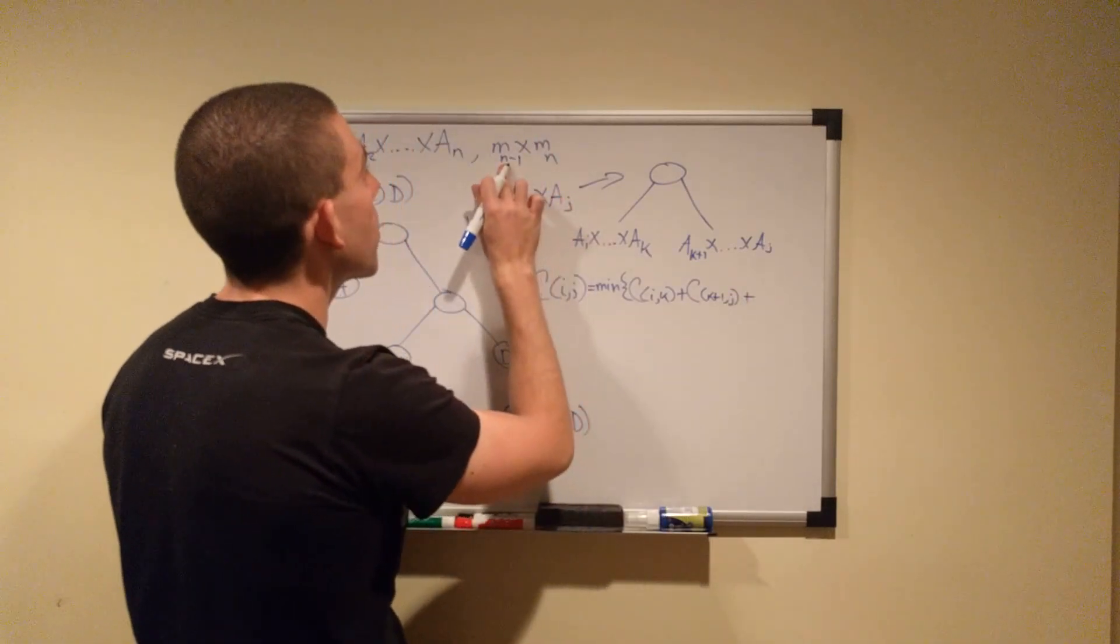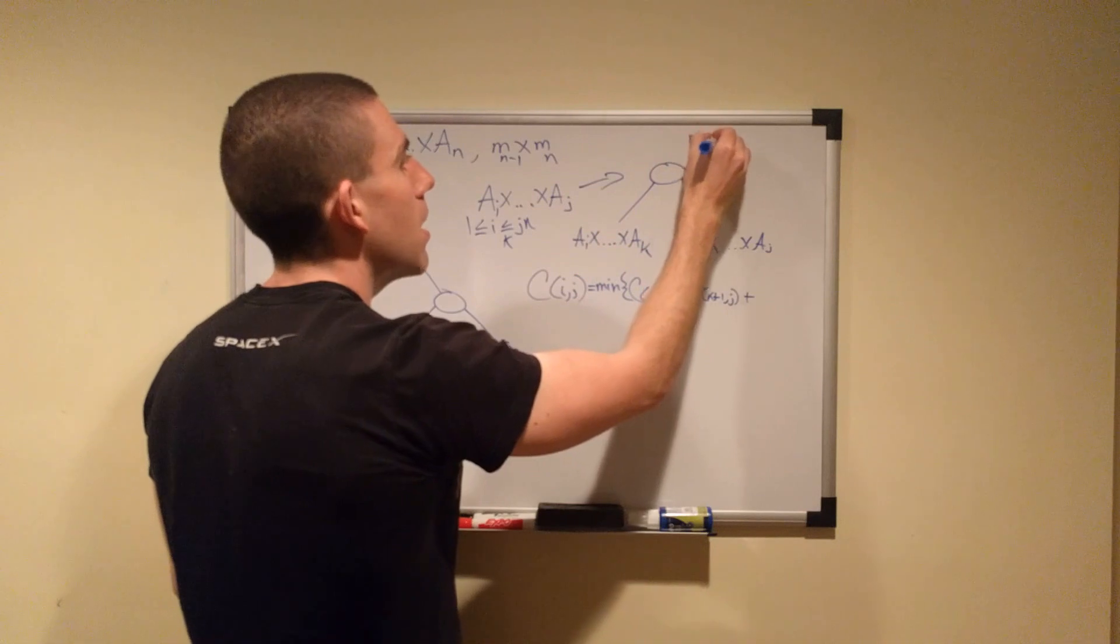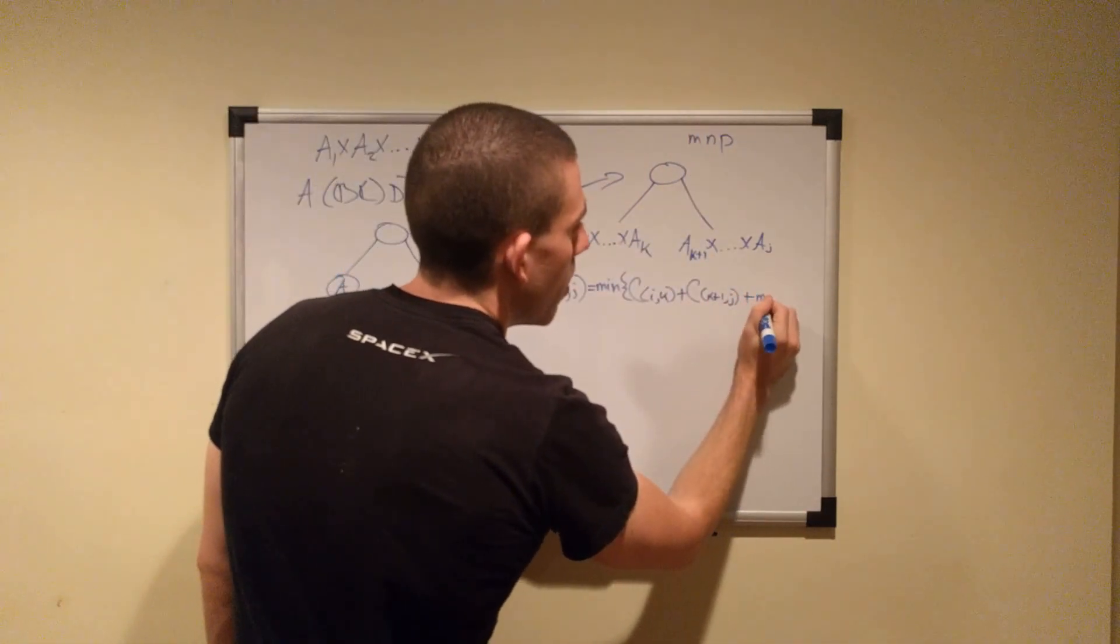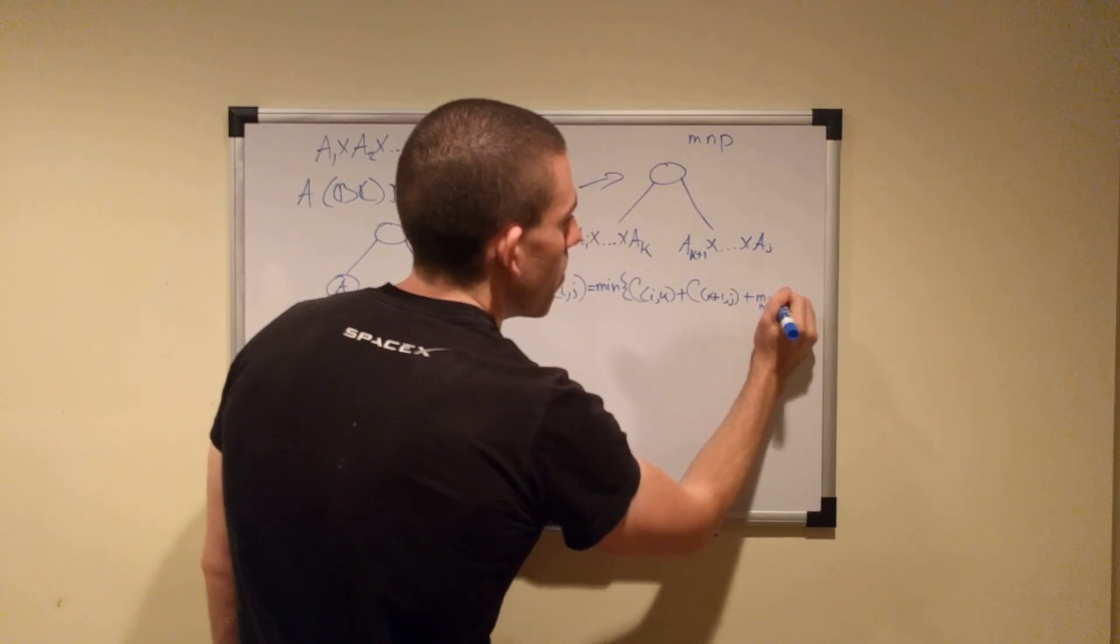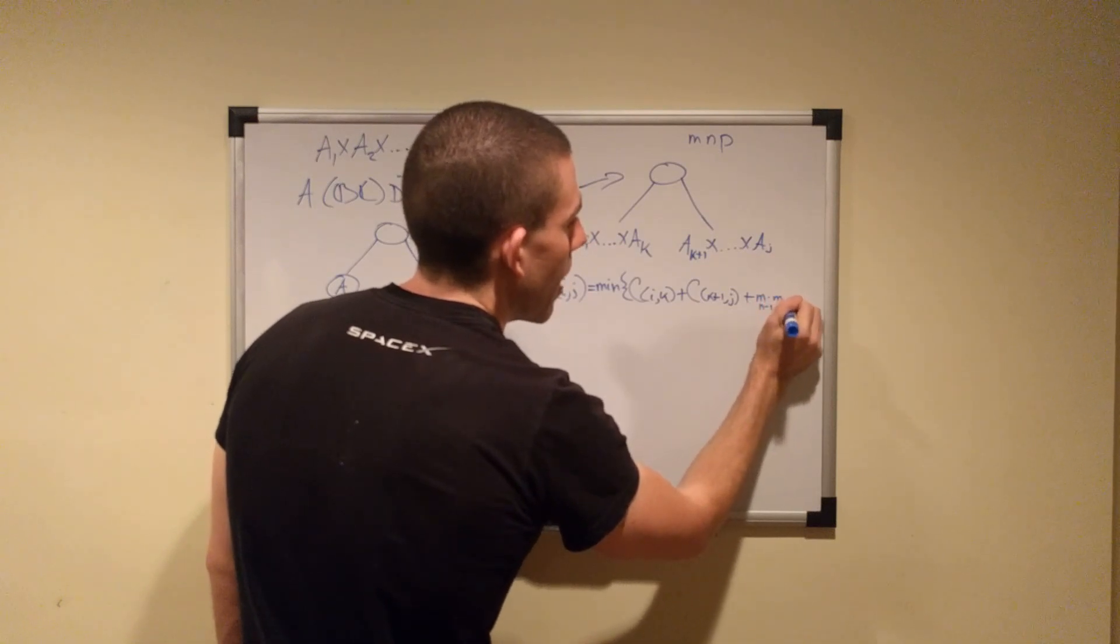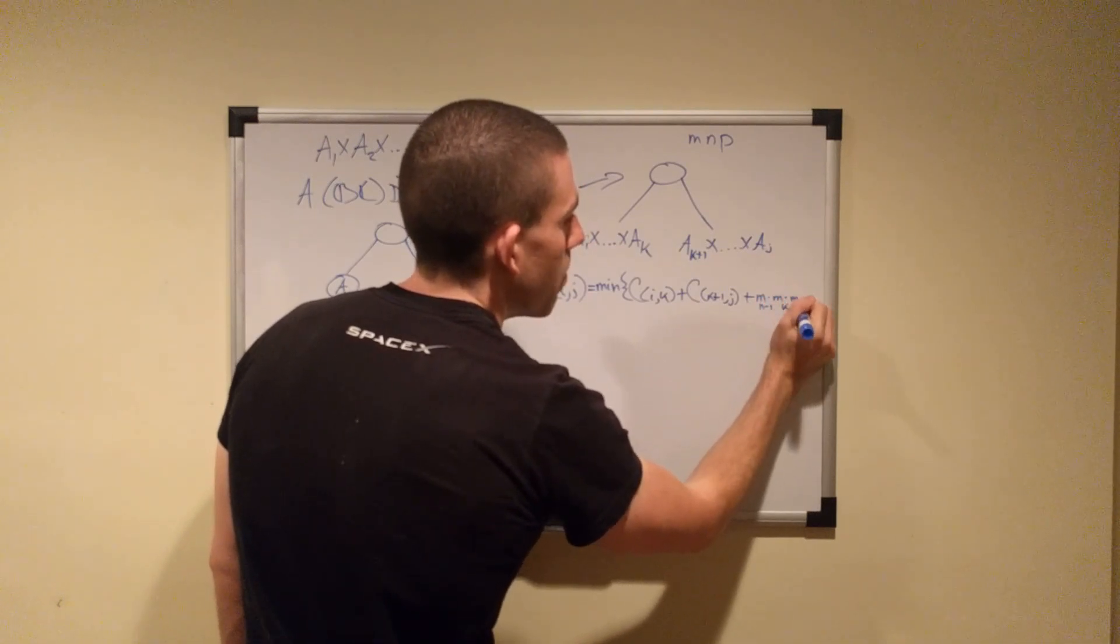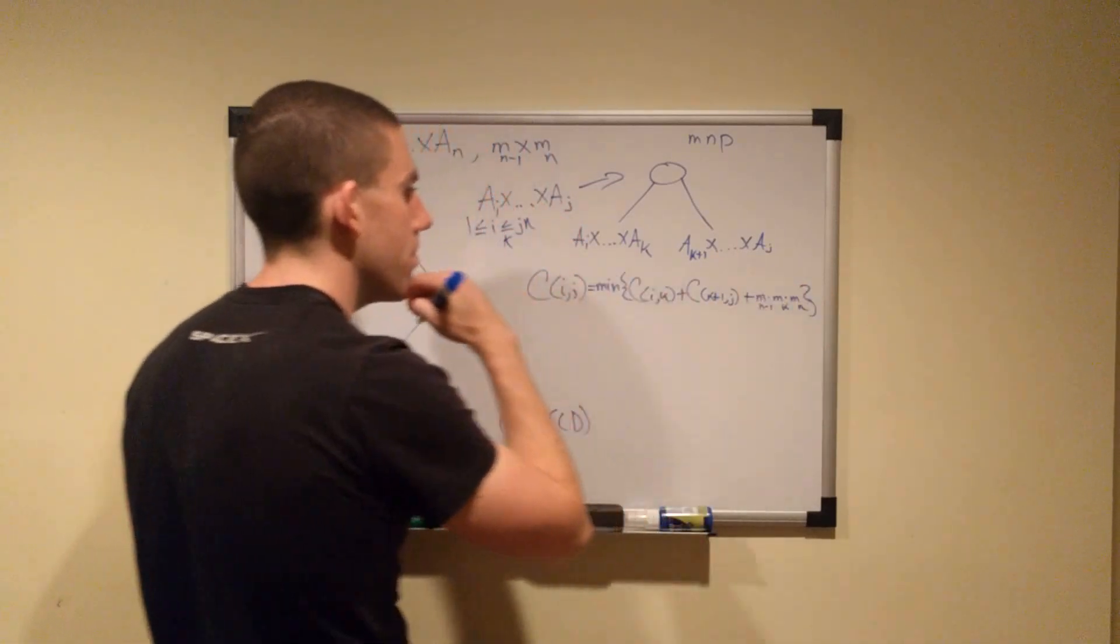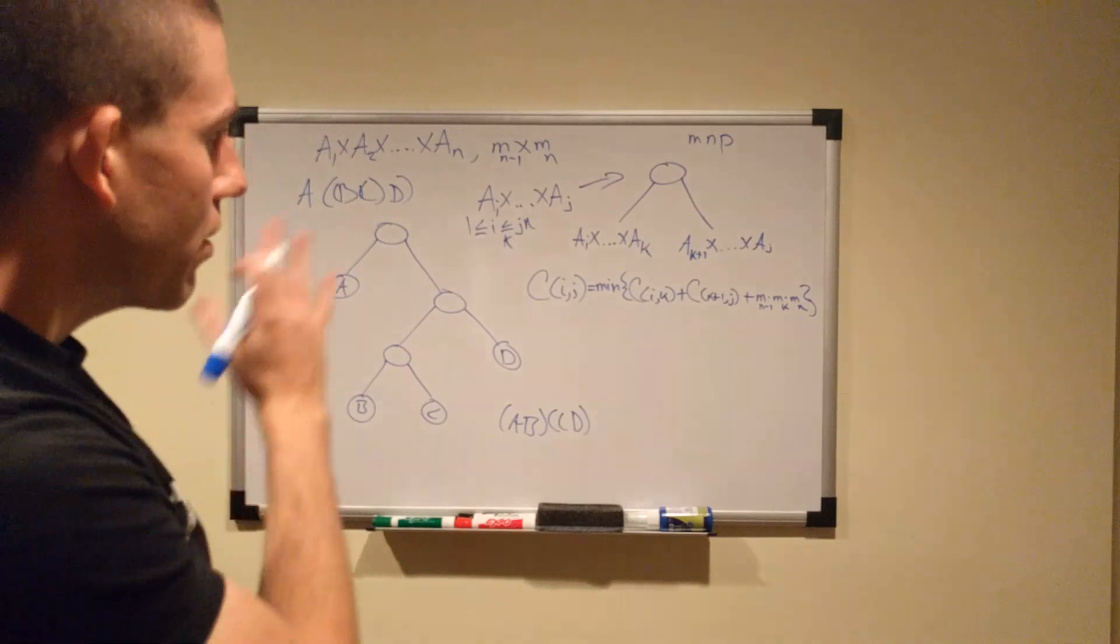So plus the cost of combining, which will be going from the index, we know we have m, n, p for the cost, so the indexes will be m of i minus 1, by m of k, by m of j. And that's how we'll think about it.